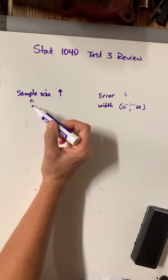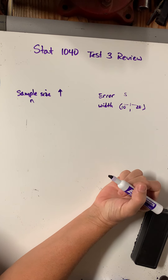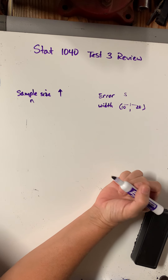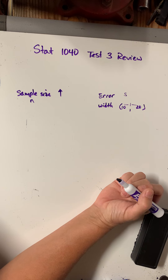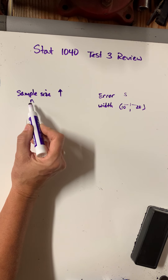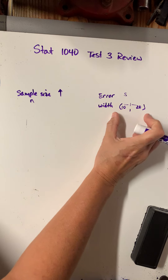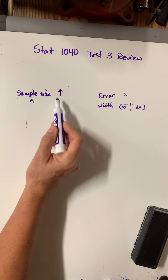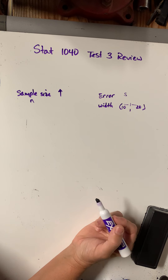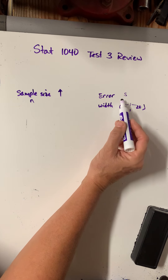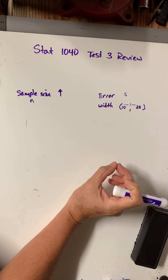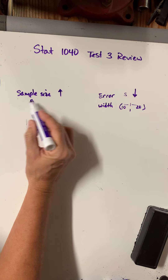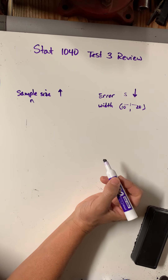If my sample size increases, what happens? Think about buying something on Amazon and looking at reviews. If a product got 5 stars but only 2 people reviewed it, that's a small sample size with a lot of error — you can't really depend on it. But if 2,000 people gave it 5 stars, that's a smaller error, more precise. So my error decreases as my sample size increases — it gets more precise, and the width narrows toward the real number.